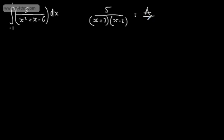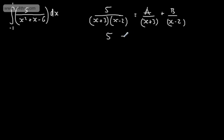Multiplying through, we get 5 equals a(x minus 2) plus b(x plus 3). You can solve this any way you want — let's use substitution.